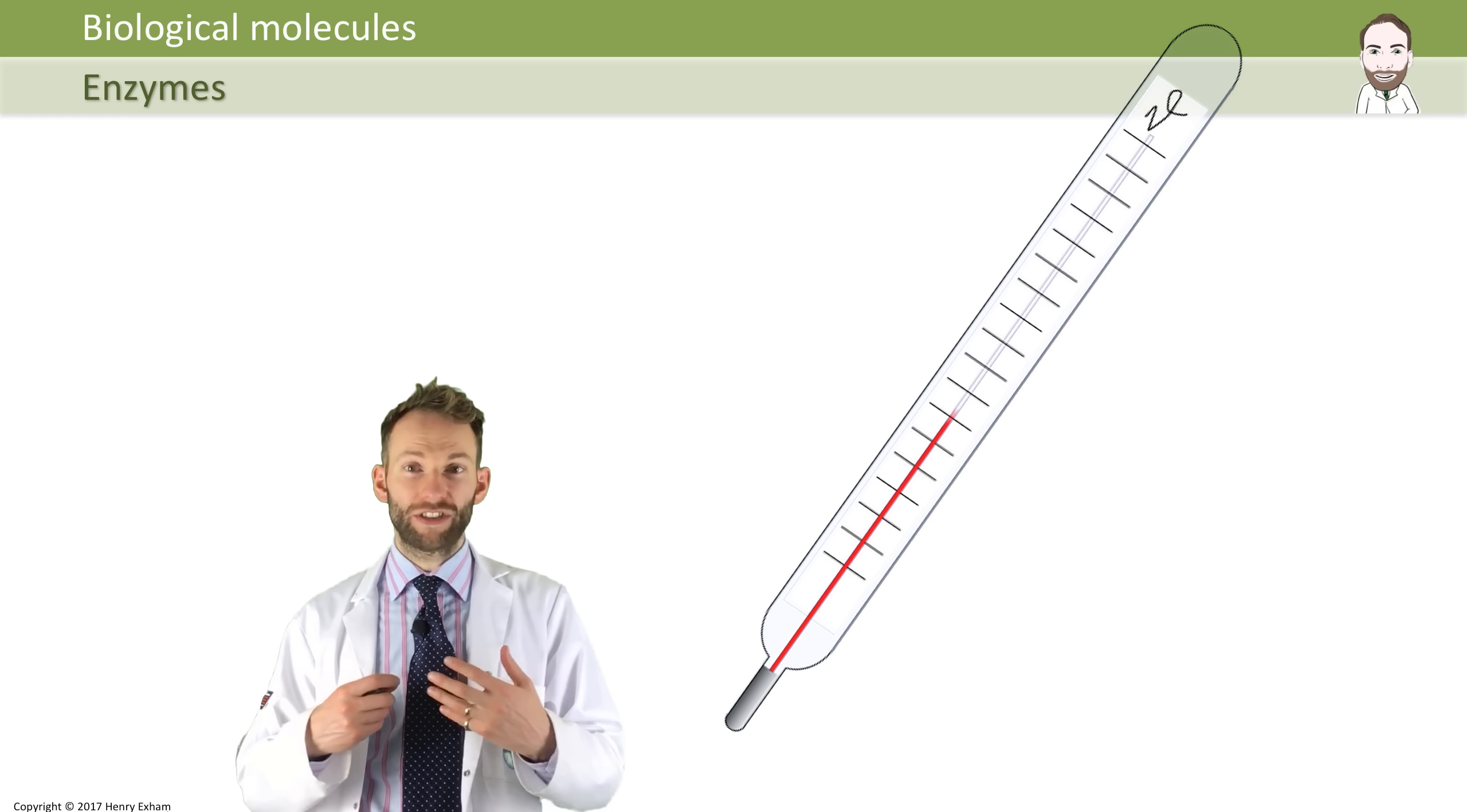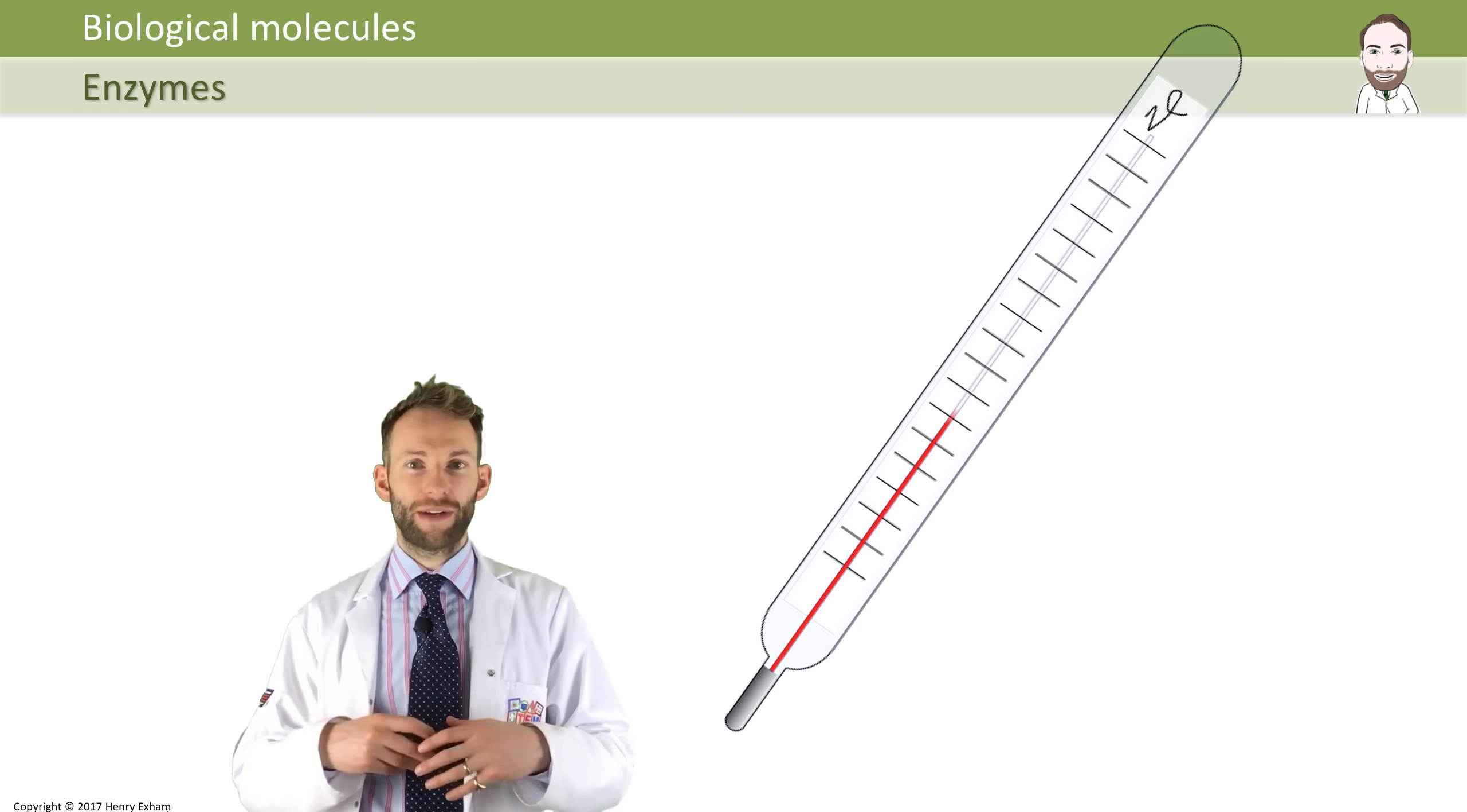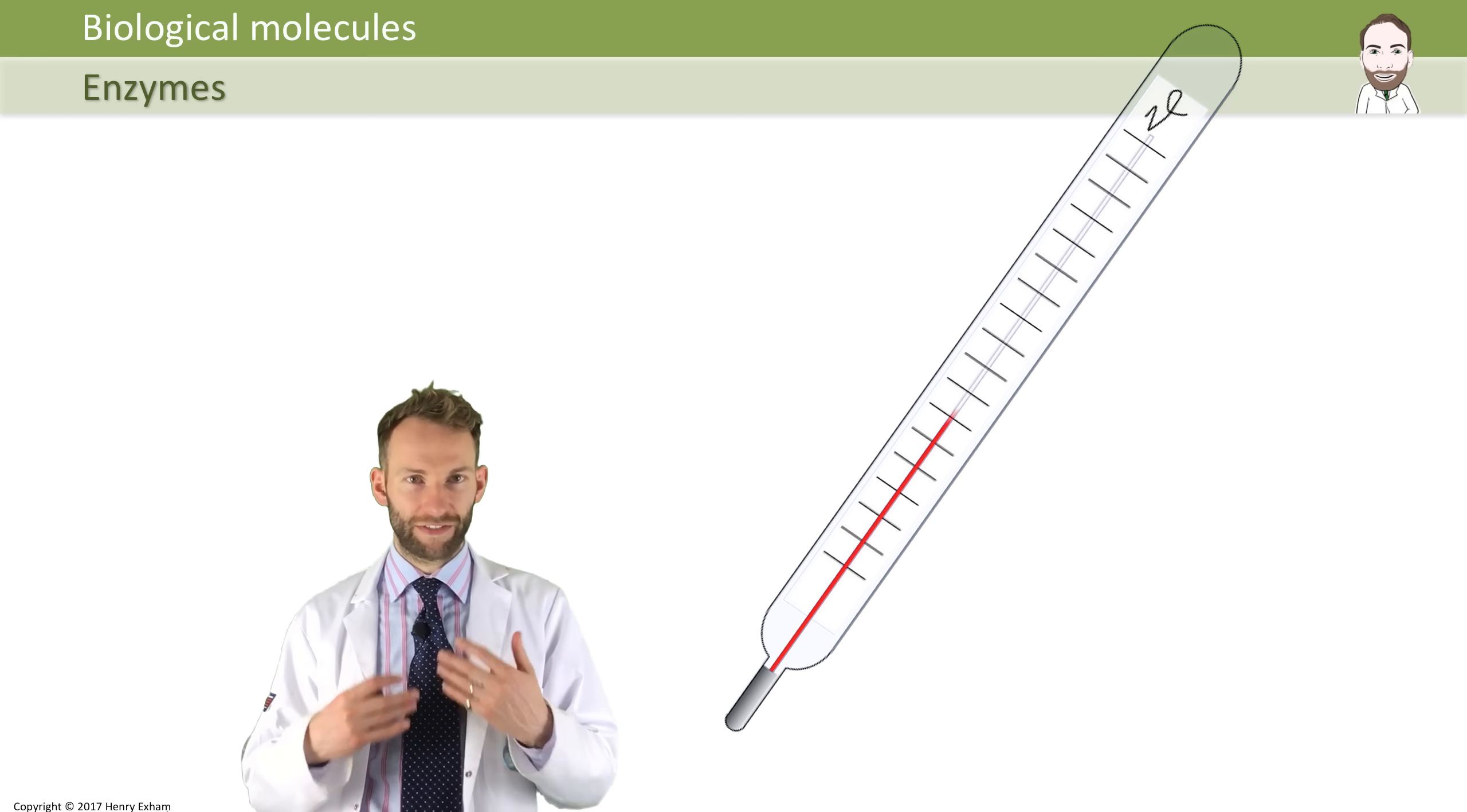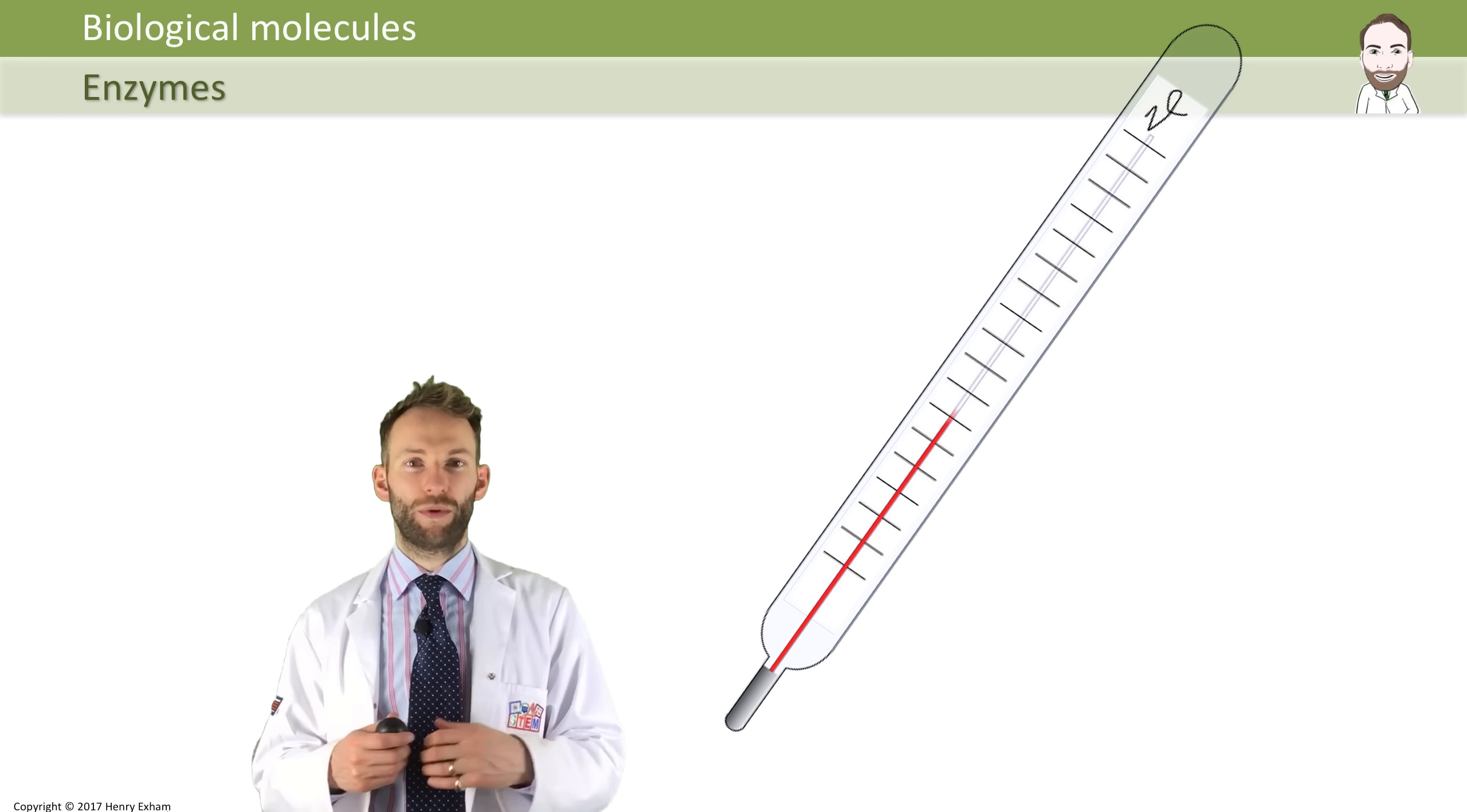Without enzymes, our bodies would probably just work too slowly, but enzymes can speed up the rate of all the reactions so our body temperature doesn't need to be kept any higher than 37 degrees Celsius. They really, really help - very, very important and crucial.